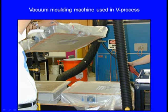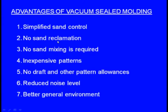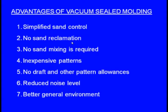In the V process, we can see the vacuum moulding machine with vacuum applied and the polymer film. The advantages of the vacuum sealed moulding process: simplified sand control — in green sand moulding, binder, additives, and moisture must be carefully controlled, but here we take fine, dry, clear sand with no preparation required. No sand reclamation is needed — the moment you release the vacuum, the whole sand falls down and can be reused as-is for the next casting. No sand mixing is required.